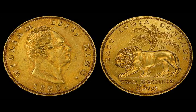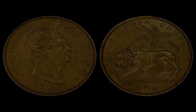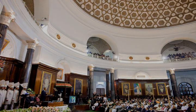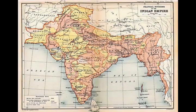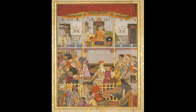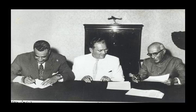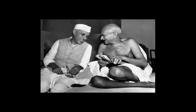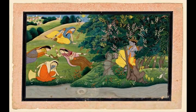Despite economic growth during recent decades, India continues to face socio-economic challenges. In 2006, India contained the largest number of people living below the World Bank's international poverty line of US$1.25 per day. The proportion decreased from 60% in 1981 to 42% in 2005; under the World Bank's later revised poverty line, it was 21% in 2011. 30.7% of India's children under the age of 5 are underweight. According to a Food and Agriculture Organization report in 2015, 15% of the population is undernourished. According to a 2016 Walk Free Foundation report, there were an estimated 18.3 million people in India, or 1.4% of the population, living in forms of modern slavery such as bonded labour, child labour, human trafficking, and forced begging.